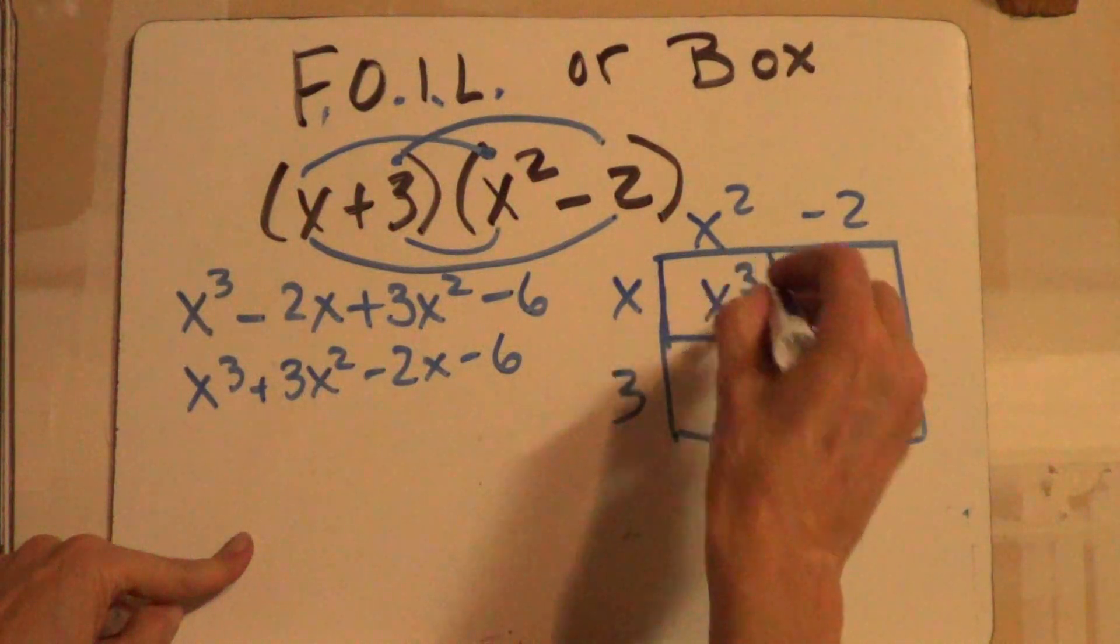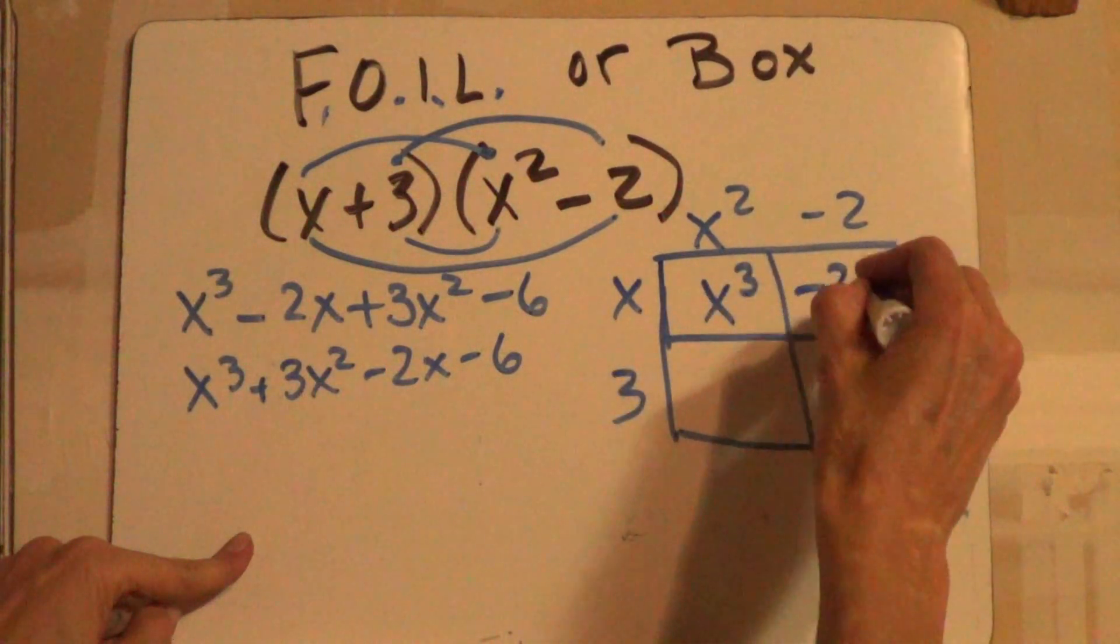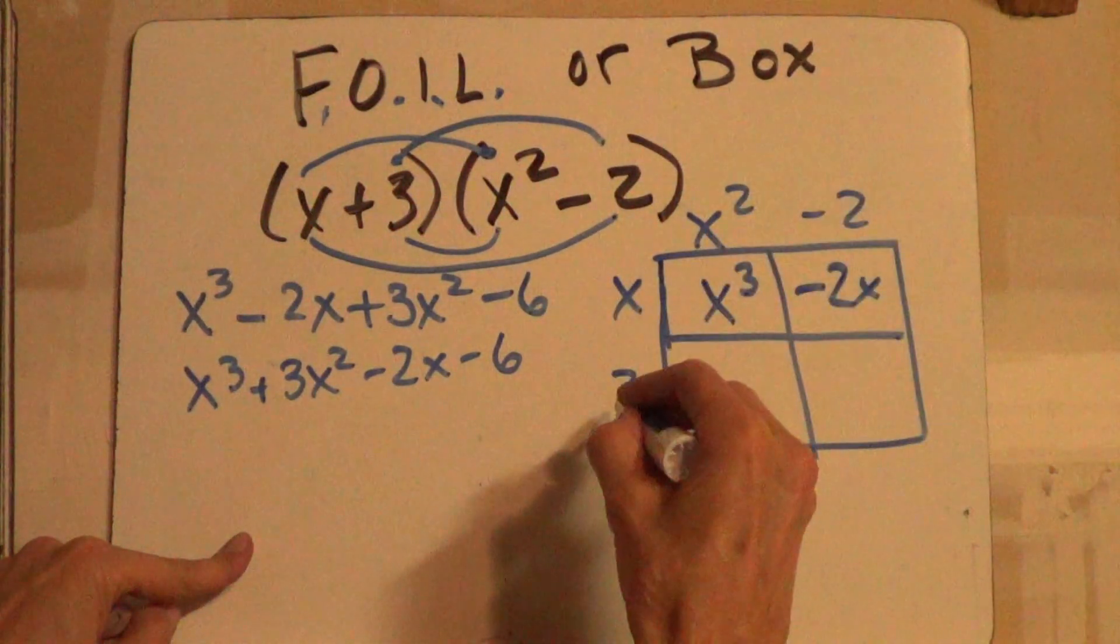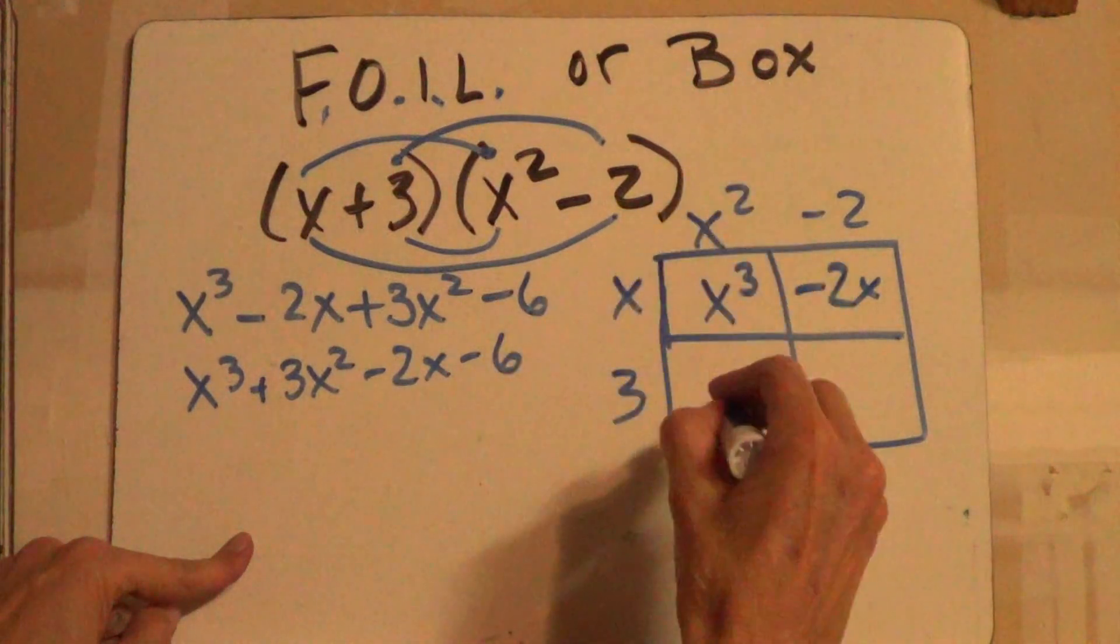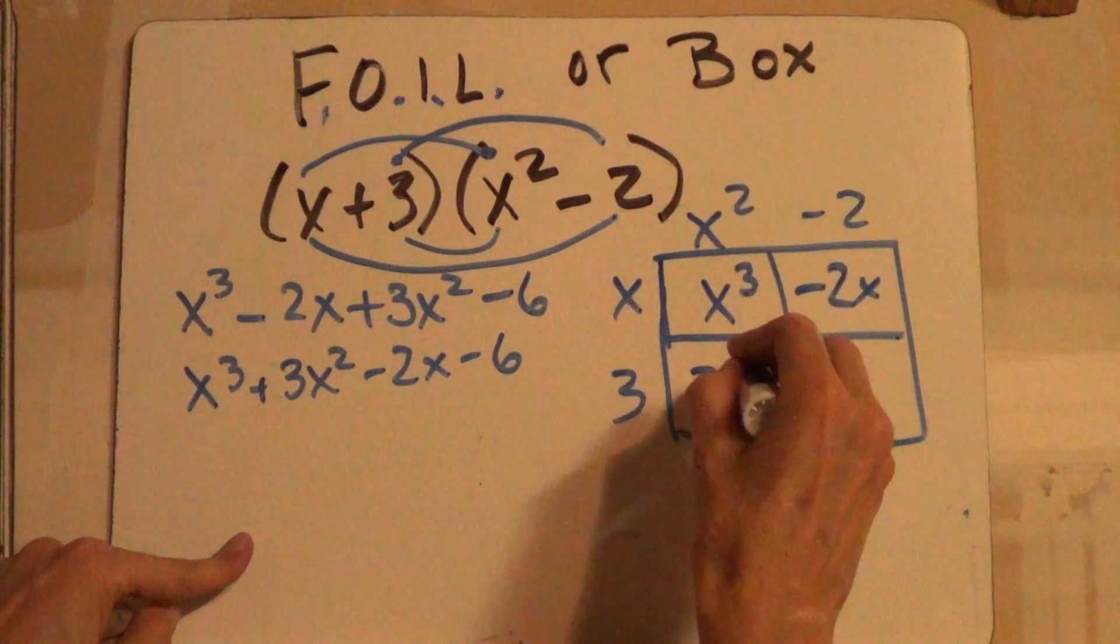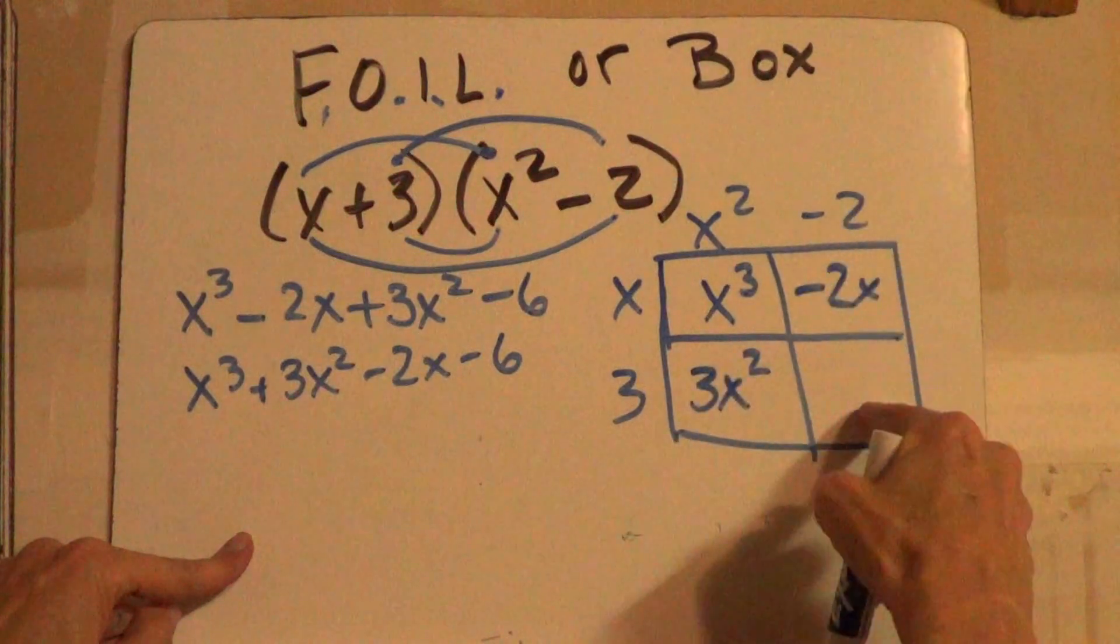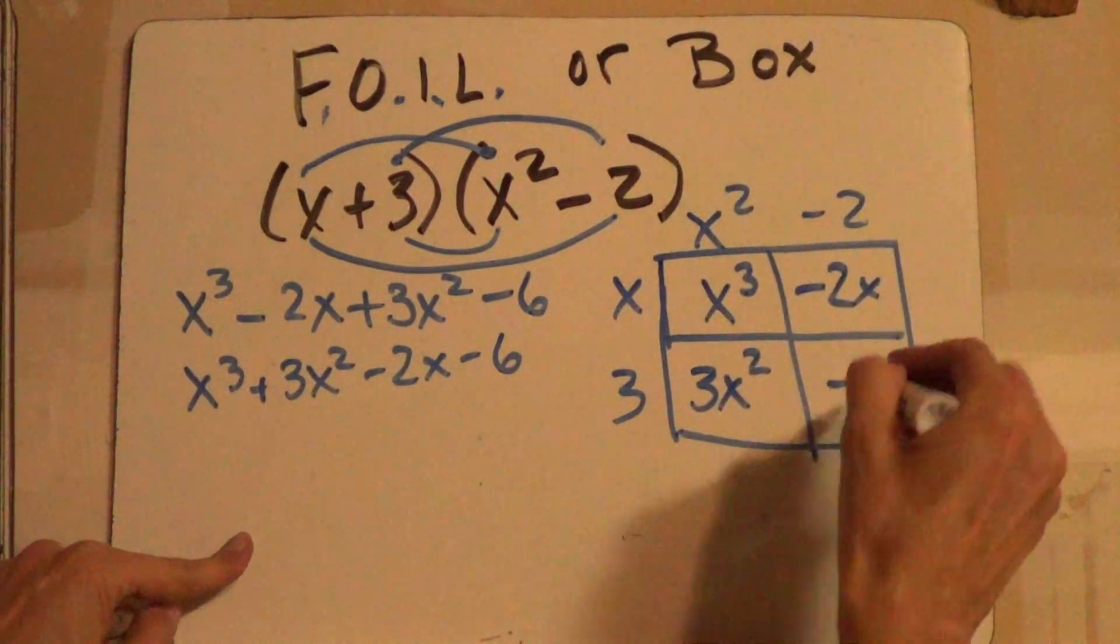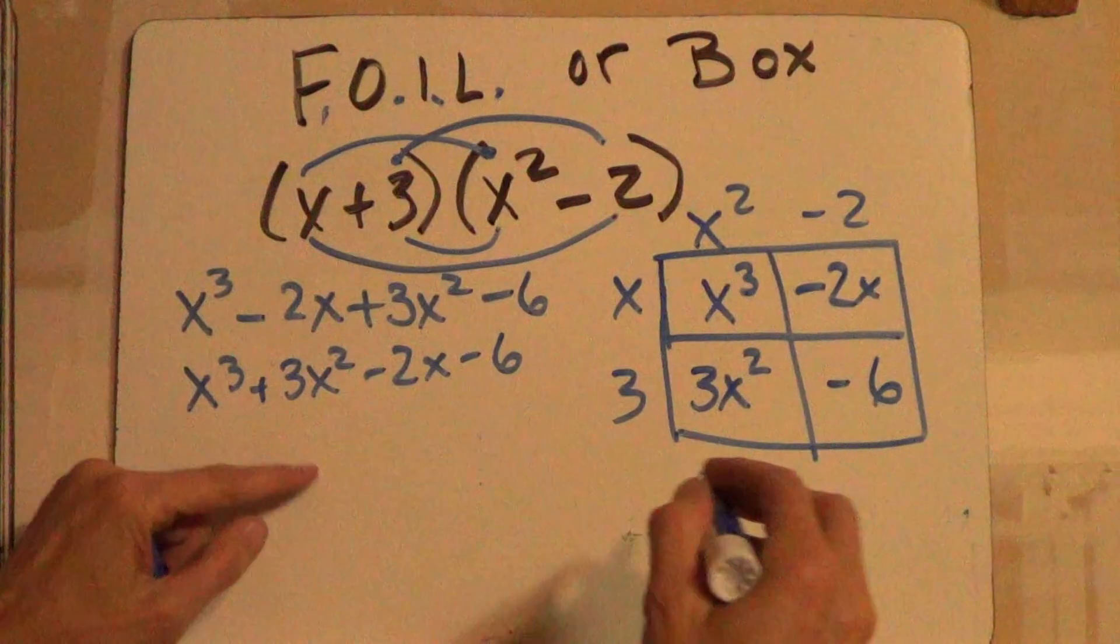That's all you're doing is you're taking this times this and putting it in here, so that would be x cubed, negative 2x, 3 times x squared, 3x squared, and 3 times negative 2, negative 6. So you just line up where they line up at.